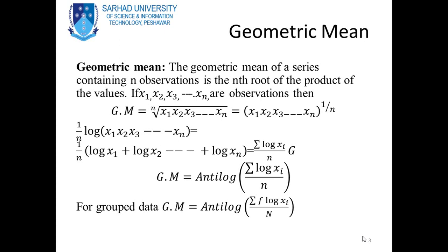Taking the log on both sides: log of (x1 · x2 · ... · xn) equals 1 over n. According to the third law of logarithms, log m raised to power n is n log m. So we take 1/n into log(x1·x2·...·xn). According to the first law of logarithms, log(m·n) = log m + log n. So we get (1/n)[log x1 + log x2 + ... + log xn] = Σ(log xi)/n.